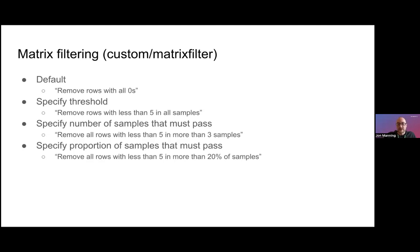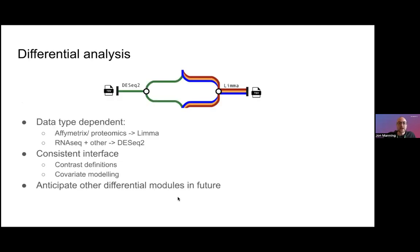For differential analysis we have DESeq2 which is currently used for RNA-seq and other undefined input types, and we have limma which is used for the Affymetrix array data and the proteomics data. But both these modules have a consistent interface. They accept contrast in the same manner and they model covariates in the same manner, and we might anticipate that as other data modalities get added to the workflow in future, we add other specialist differential modules.